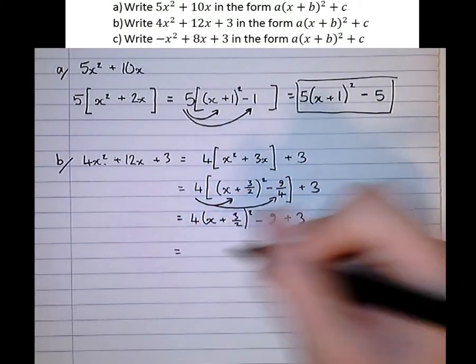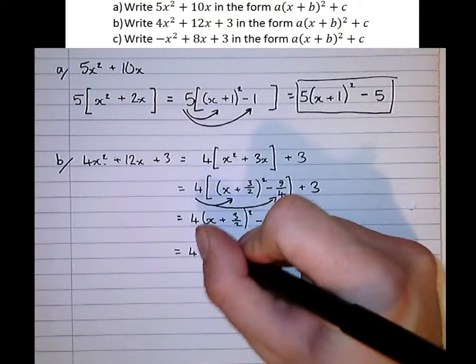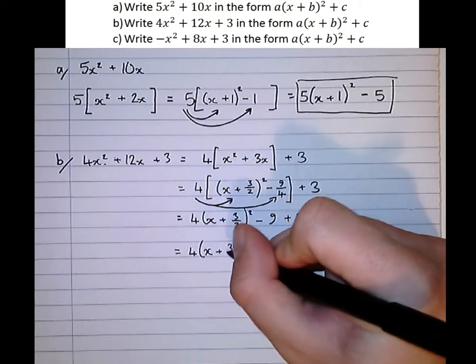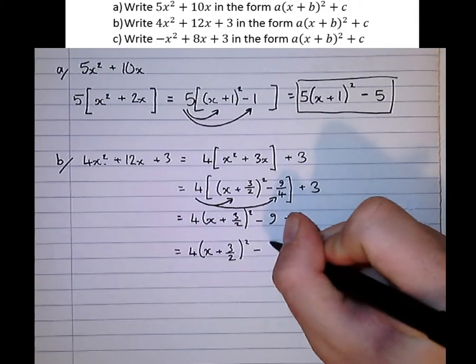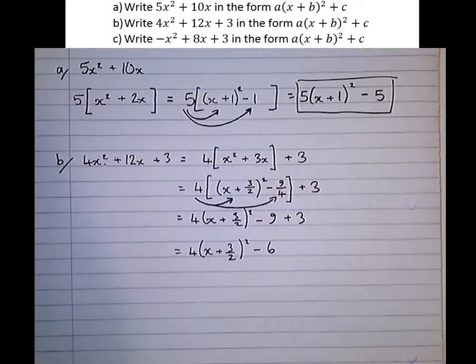So let's simplify now. So 4, x plus 3 over 2, squared, take 6. And there's the answer to that one.